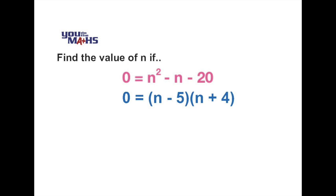And if we've got a product of two expressions equal to 0, one of those expressions must equal 0. So either n minus 5 equals 0 which means n equals 5, or n plus 4 equals 0 which means n equals negative 4.